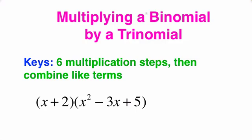Now it's assumed that in this video you've already mastered FOIL, multiplying a binomial by a binomial. When you do FOIL, you're doing four multiplication steps. We're just going to extend the exact same concept to multiplying a binomial by a trinomial. So we're going to have six multiplication steps. Then after doing the six multiplication steps, just like with FOIL, we're going to have to combine like terms.